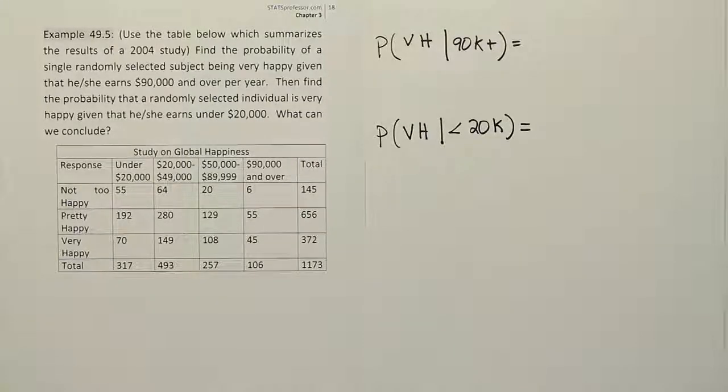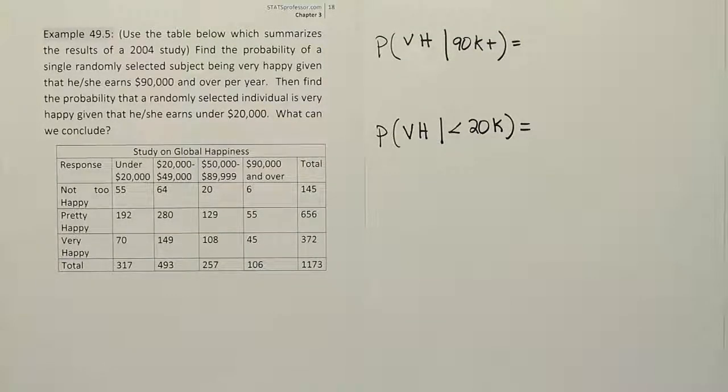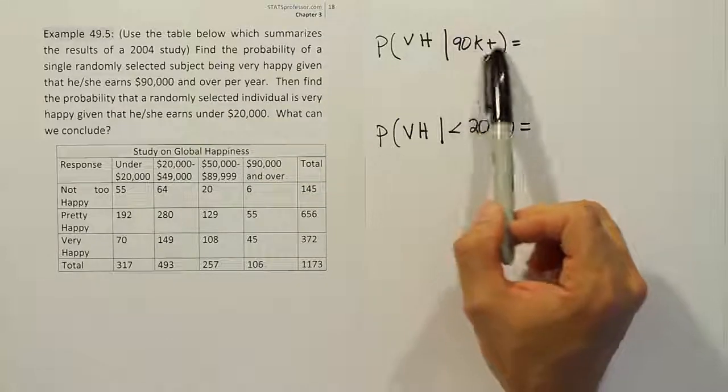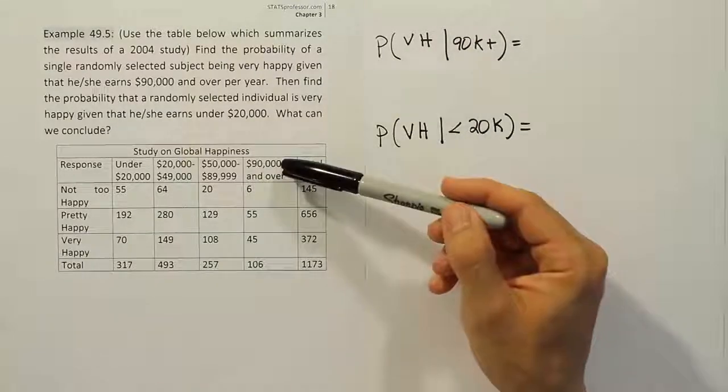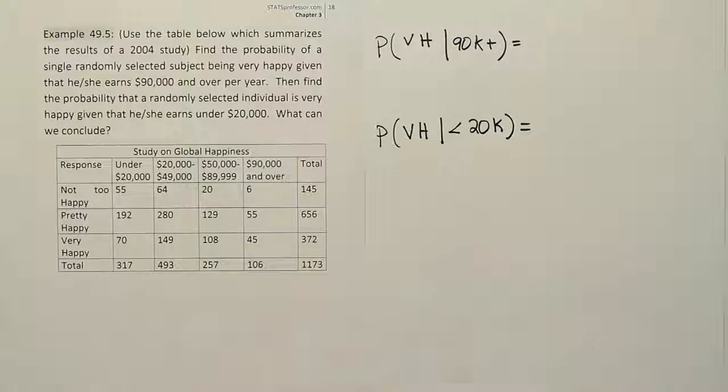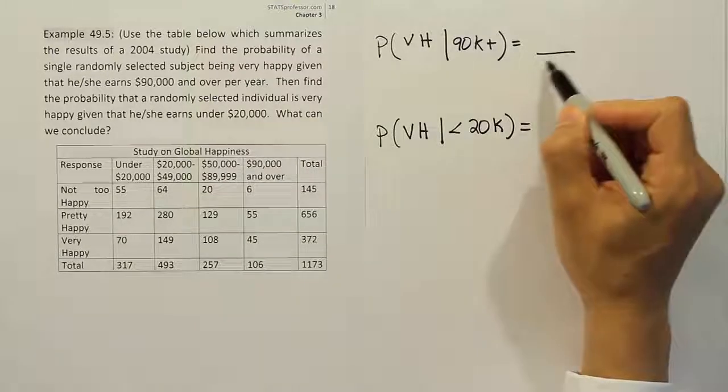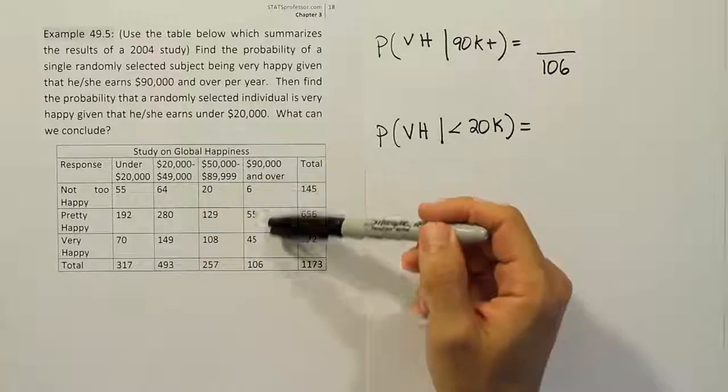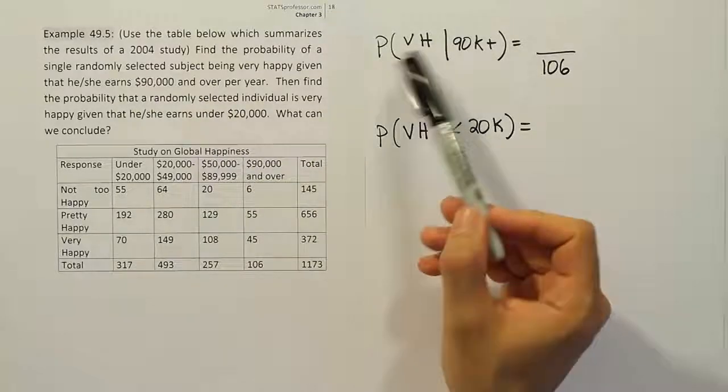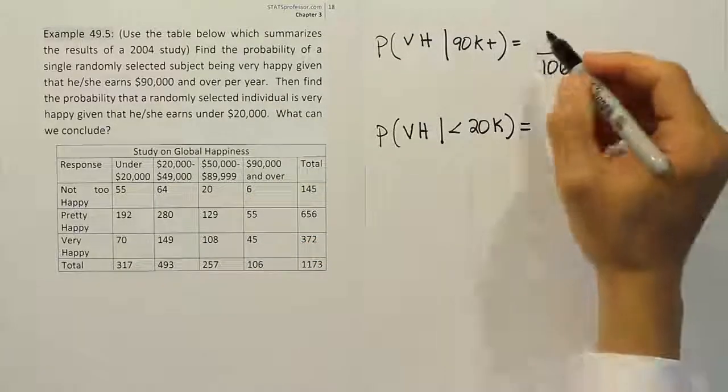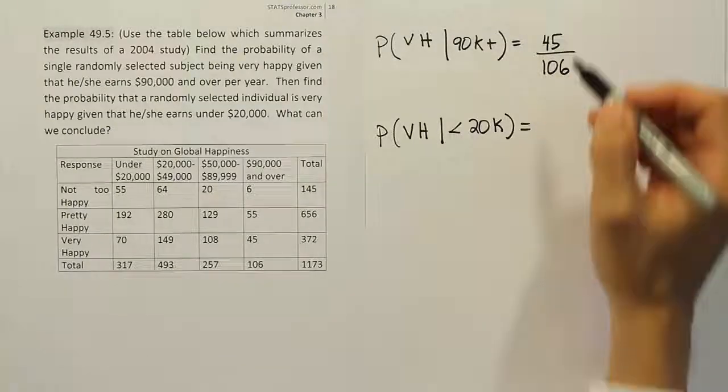We've done this a few times in earlier examples, so we can move a little faster. Using the shortcut method, we're going to focus our attention only on the category that corresponds to $90,000 or more per year - this column here. The total for that column becomes our denominator, so we're going to use 106 at the bottom of this fraction. And then of the remaining numbers in that column, we need to pick the number that corresponds to very happy. This one here - so 45 becomes our number for the top of that fraction.